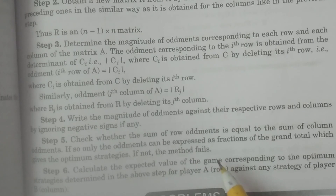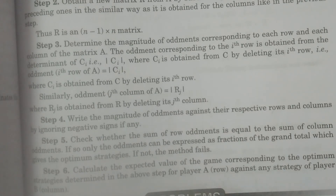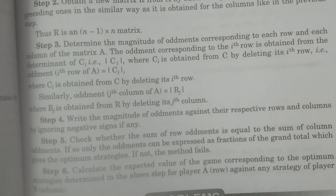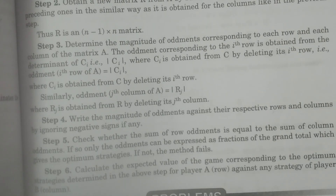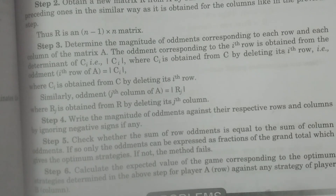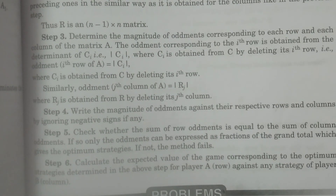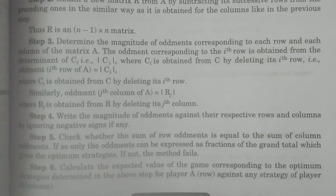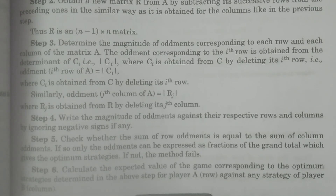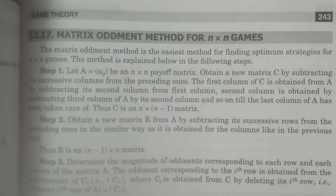Step 6: calculate the expected value of the game corresponding to the optimal strategies determined in the above step for player A, by taking any row or any column with their respective probabilities. By multiplying, the expected value of the game is obtained. For any strategy of player A or player B, we can calculate the expected value of the game. This is the procedure of the method of oddments in game theory, calculated only for n by n games. Hope you understand. Thank you very much.